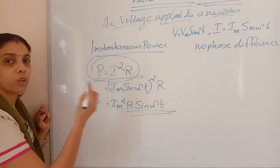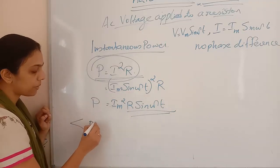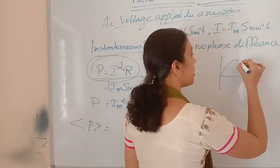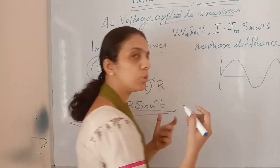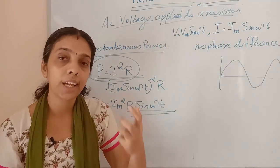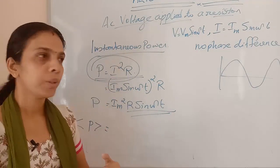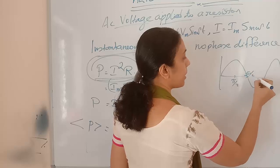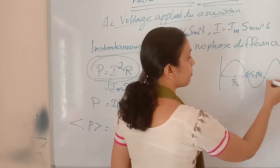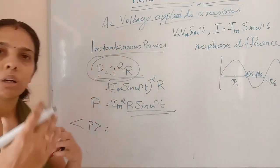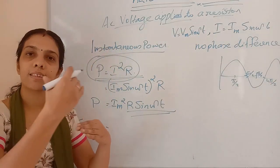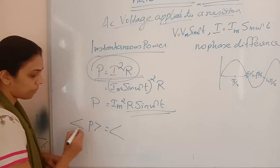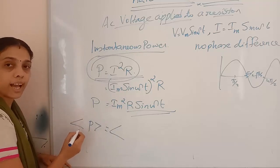Now we find the average power. In an AC source the current's amplitude is changing continuously and its direction is changing periodically — every π/2 the direction changes. So the average power is represented as Im²R times the average of sin²(ωt).